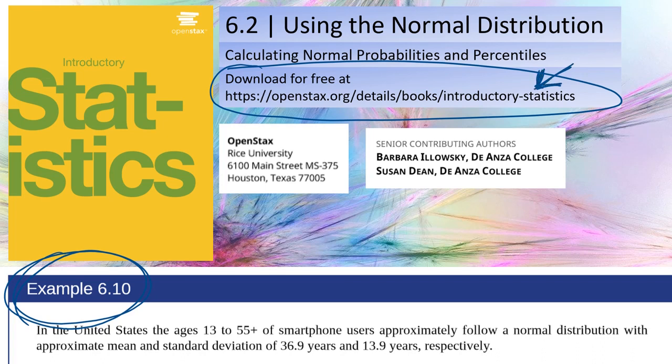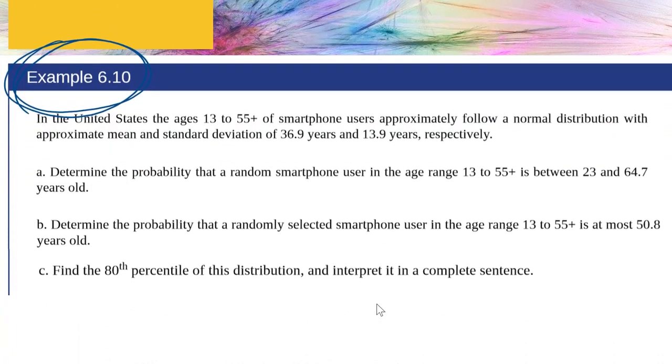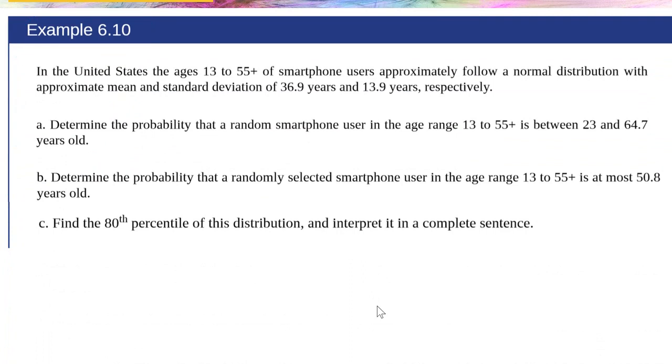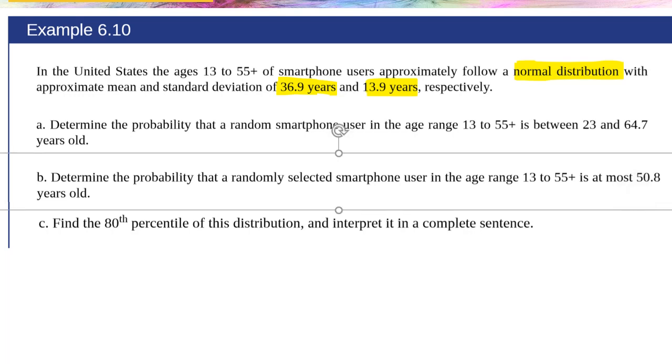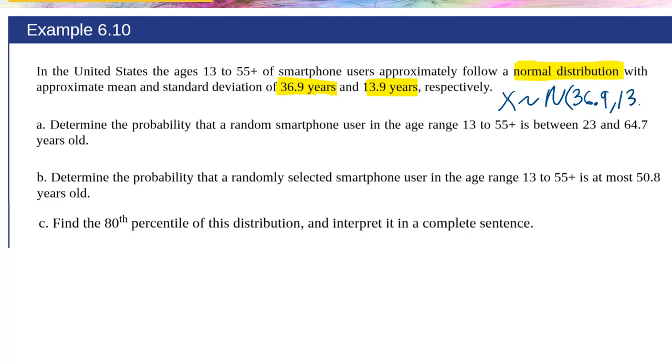Let's go ahead and start by reading through the problem. In the United States, the ages 13 to 55 of smartphone users approximately follow a normal distribution with approximate mean and standard deviation of 36.9 years and 13.9 years. So if X were the ages of smartphone users, then X follows a normal distribution with mean 36.9 and standard deviation 13.9.